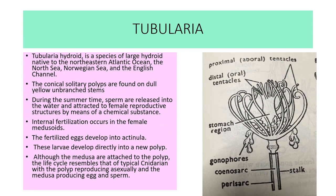Tubularia is a species of large hydroid native to the northeastern Atlantic Ocean and the North Sea. The colonial solitary polyps are found on dull yellow unbranched stems. During summer, sperms released in the water are attracted to female reproductive structures by chemical substances. Internal fertilization occurs in the female medusoids. The fertilized egg develops into actinula larvae, which develop directly into new polyps. Although the medusa are attached to the polyp, the life cycle resembles that of a typical cnidarian, with the polyp reproducing asexually and medusa producing eggs and sperms.